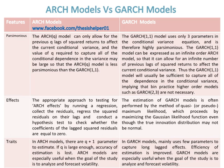In ARCH models, there are Q plus 1 parameters to estimate. If Q is large enough, accuracy of estimation is lost. ARCH models are especially useful when the goal of the study is to analyze and forecast volatility. Whereas, in GARCH models, mainly a few parameters are used to capture long lagged effects, and efficiency of estimation is improved. GARCH models are also especially useful when the goal of the study is to analyze and forecast volatility.